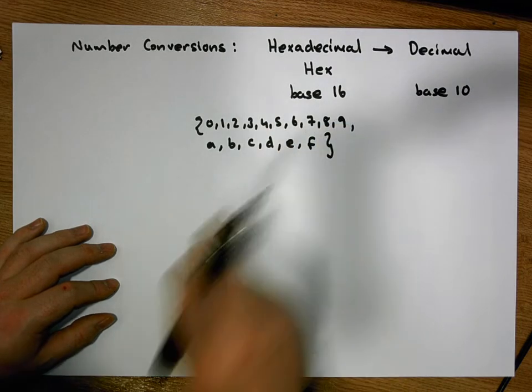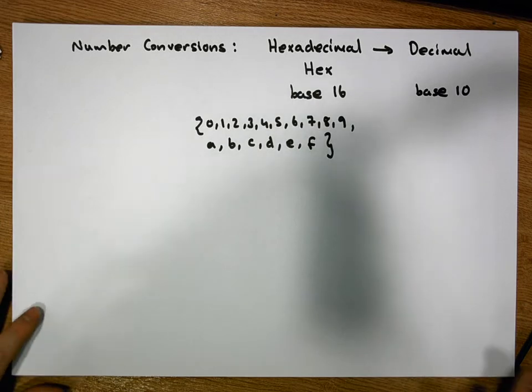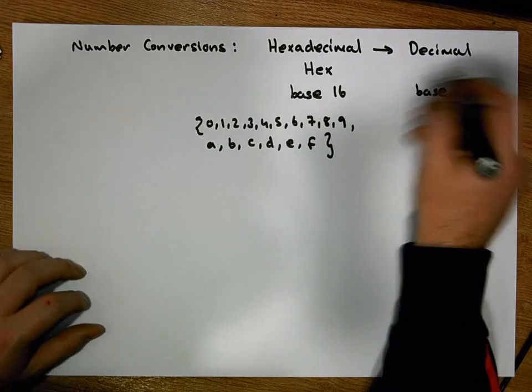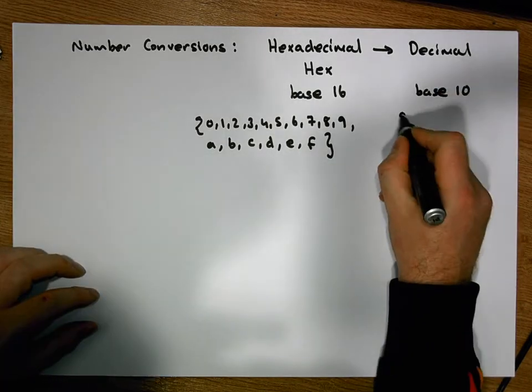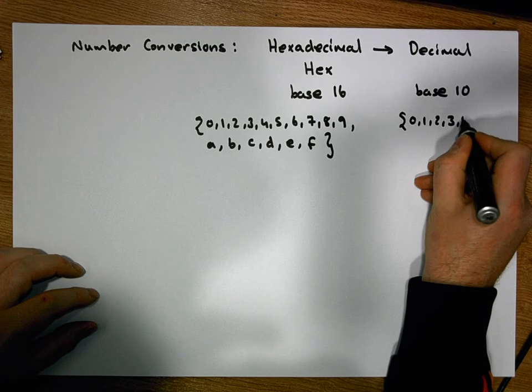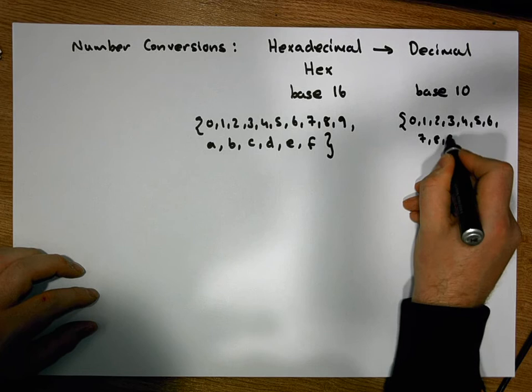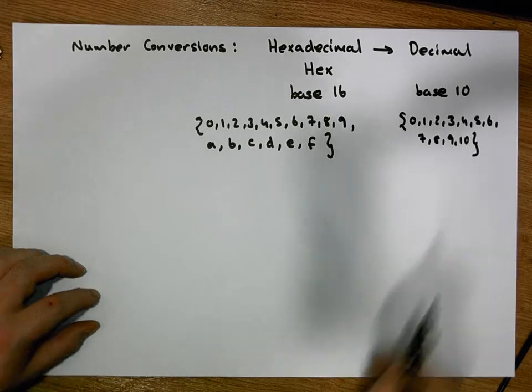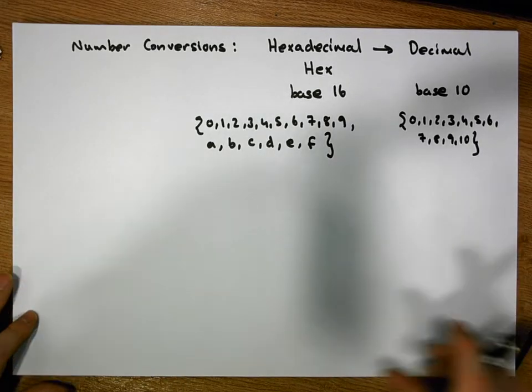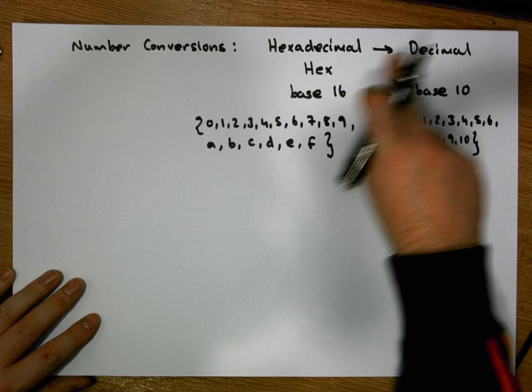Base 10 has the digits 0, 1, 2, 3, 4, 5, 6, 7, 8, 9. So we're going to convert from hex to decimal and also converting decimal back to hexadecimal.